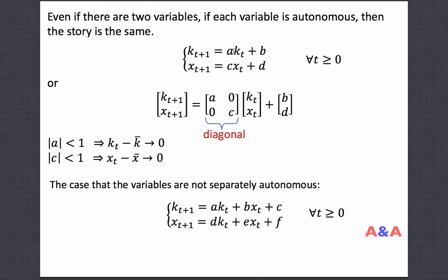If you express such a system in matrix form, then the coefficient matrix has a diagonal form. Off-diagonal elements are 0. In such a case, studying dynamics is very easy.